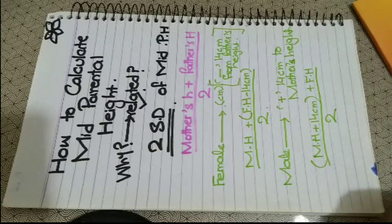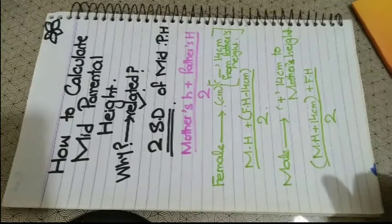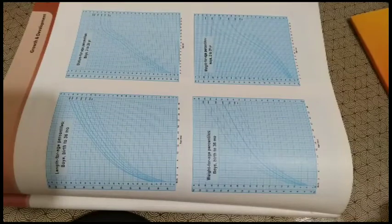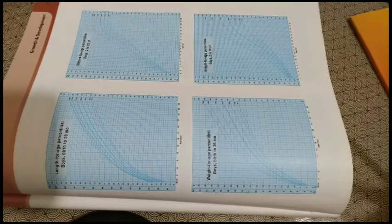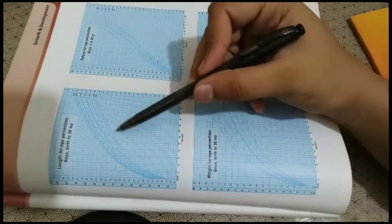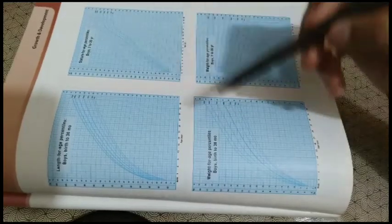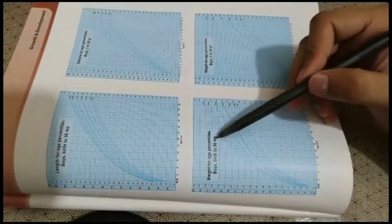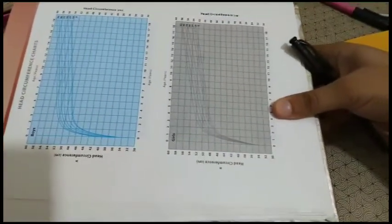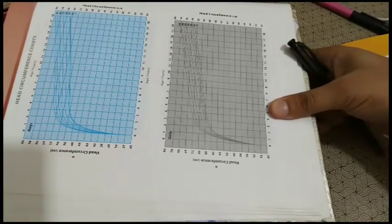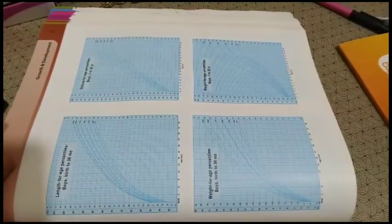We then plot this result on the growth chart of height, which I will demonstrate in the next video. These growth charts are unit-specific and measurement-specific. From 0 to 2 years we use length, then height. There are also weight charts and head circumference charts, and all are gender-specific for male and female.